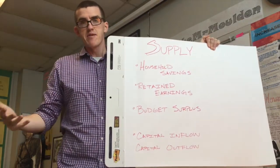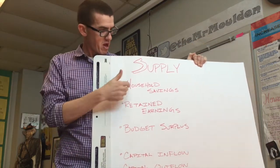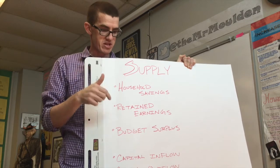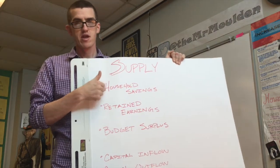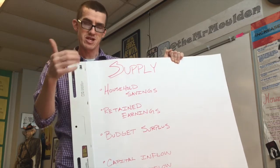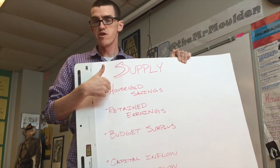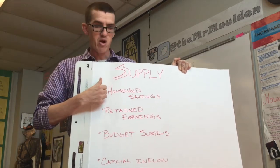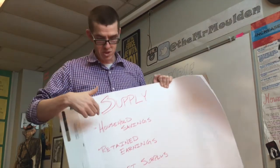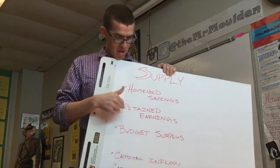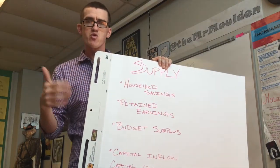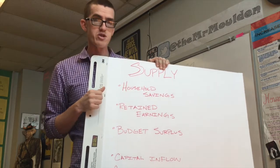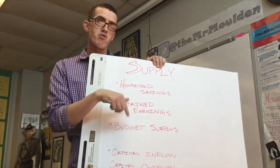Supply is impacted by the same four groups, but from their savings perspective. Anything that impacts household savings affects supply directly — banks need savings to give loans. Note that it can't be interest rates since that's the price on the graph. Our expectations about the economy matter here: in a recession, consumers tend to save more. Businesses also hold onto savings — called retained earnings — when the economy is uncertain, rather than investing, which puts more money in the bank and increases loan supply.